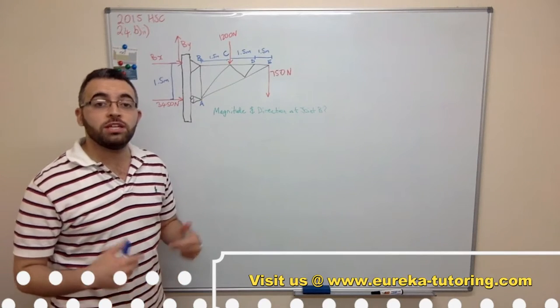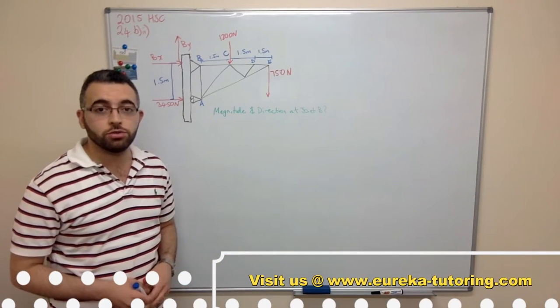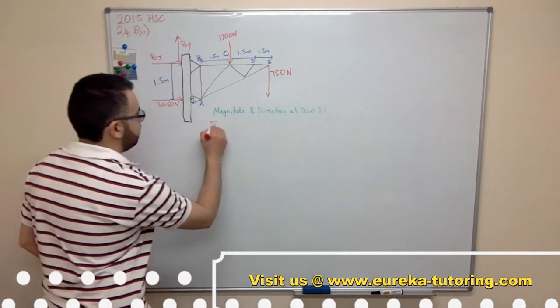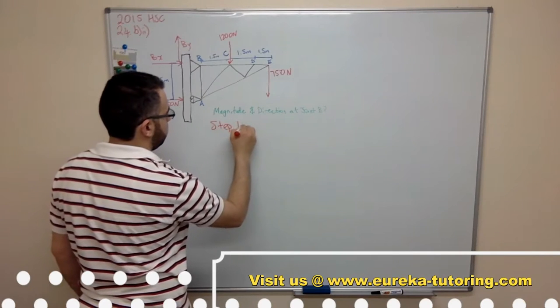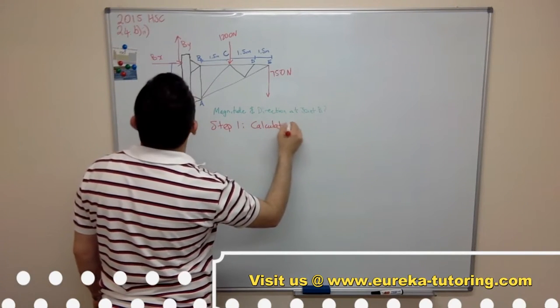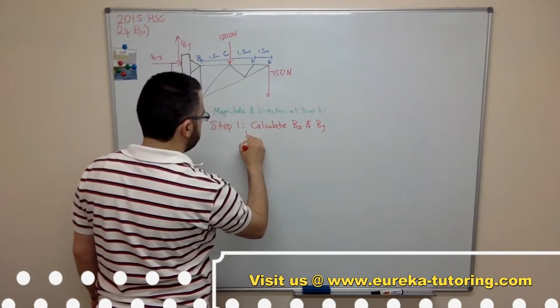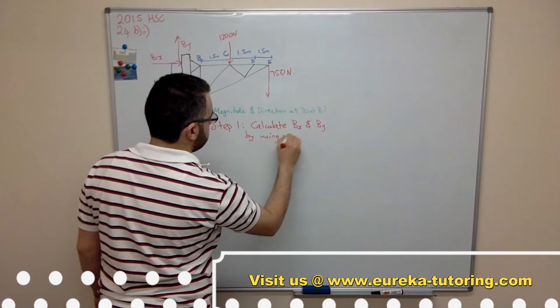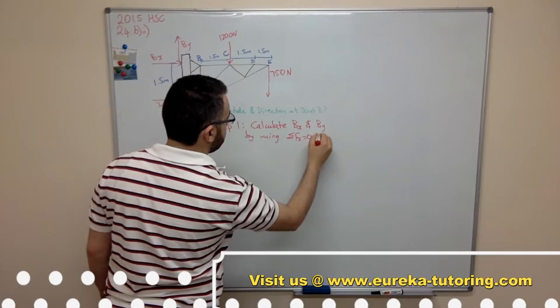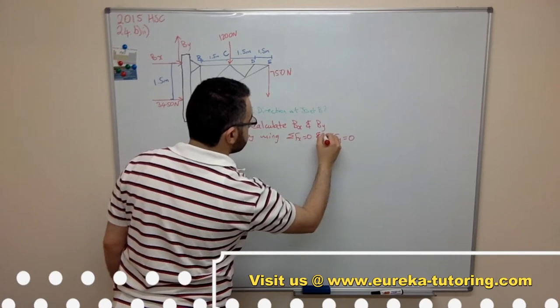The first step we need to do is use the sum of forces in both the vertical and horizontal directions to calculate both Bx and By. So step 1: calculate Bx and By by using sum of forces in the x-direction equals 0 and sum of forces in the y-direction equals 0.